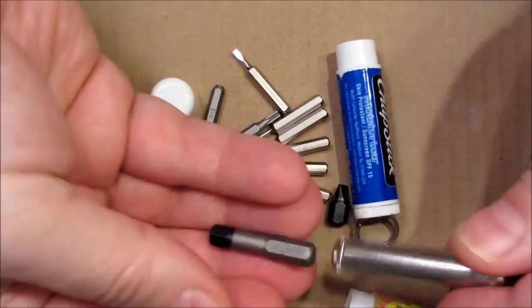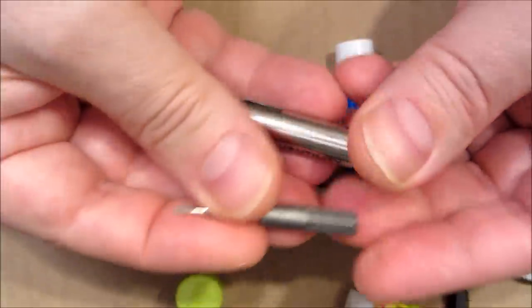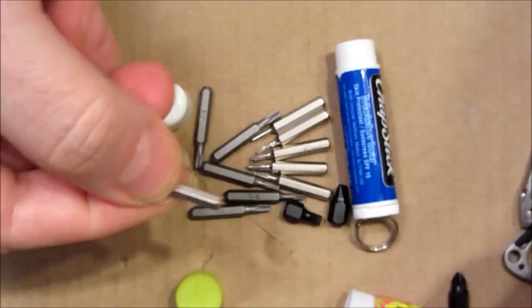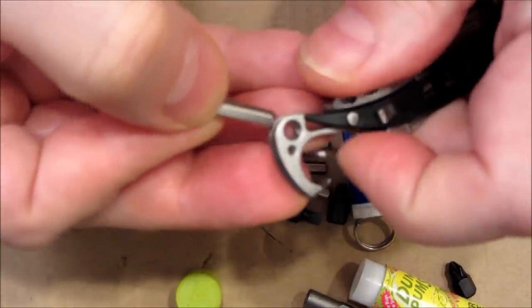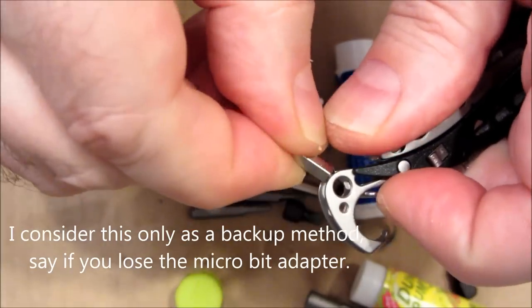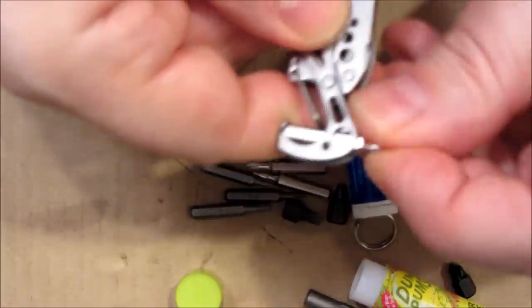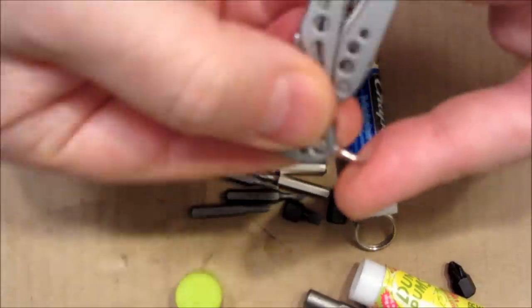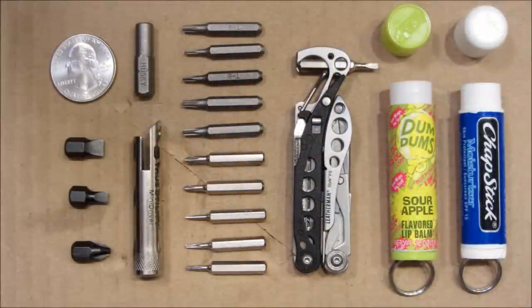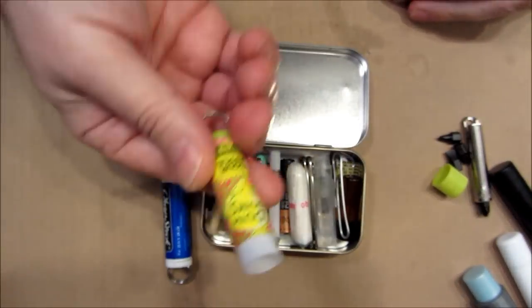So I can either use the micro bit adapter that I showed you being stored internally in here. It has a little magnetic lock. And then using that in this one, which also has a magnetic lock. So that's one option. Or, the micro bits also will fit in here. This isn't officially sanctioned by Leatherman, of course. However, you have a little micro bit screwdriver by sticking it in there.